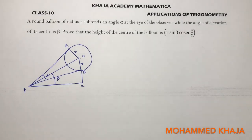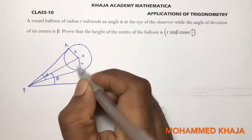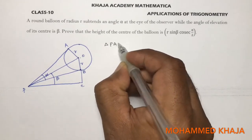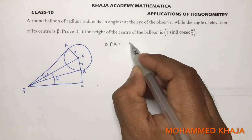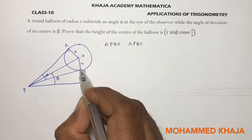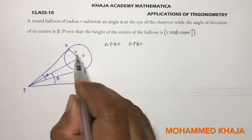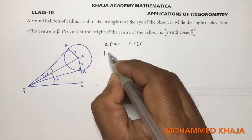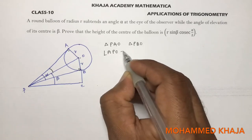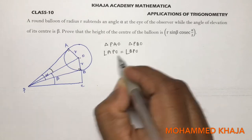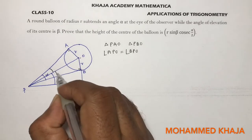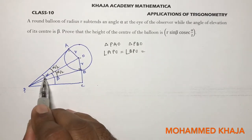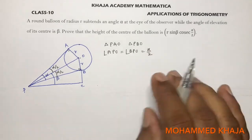Now the most important point here is the tangent properties. Triangle PAO is congruent to triangle PBO, because both have 90°, OP is common, and OA equals OB. So by these two triangles being congruent, angle APO equals angle BPO. So this angle will be alpha by 2 and this also alpha by 2, because the total is alpha.